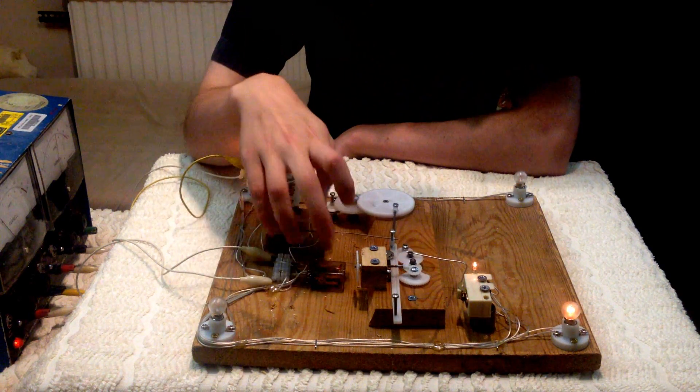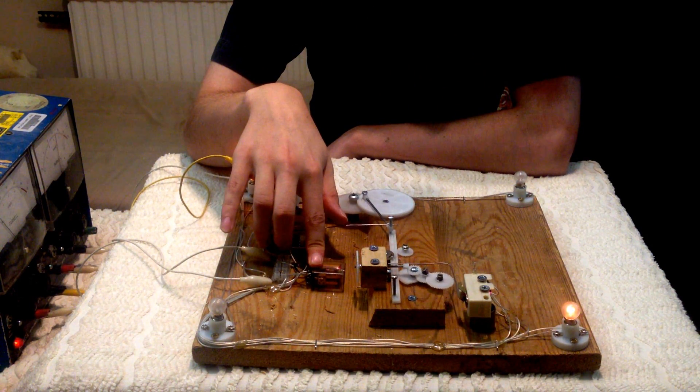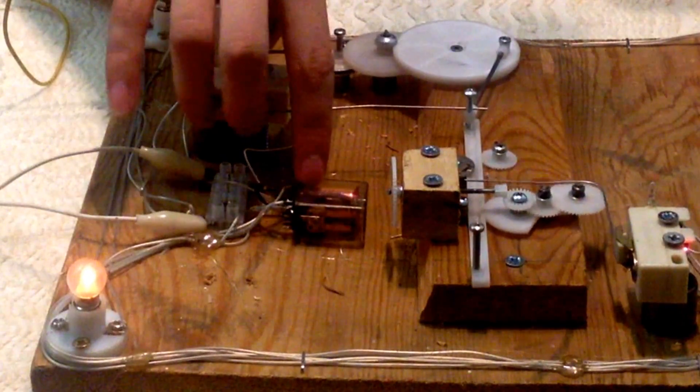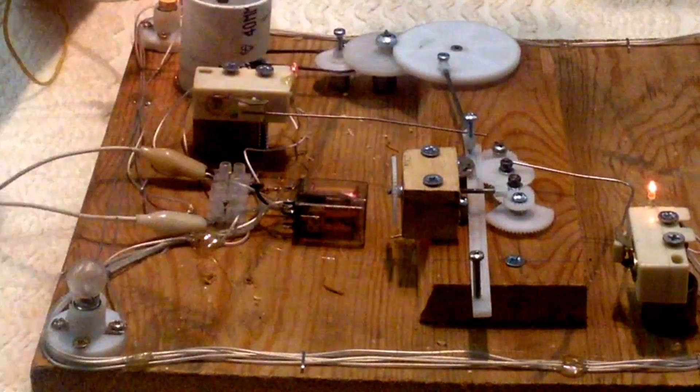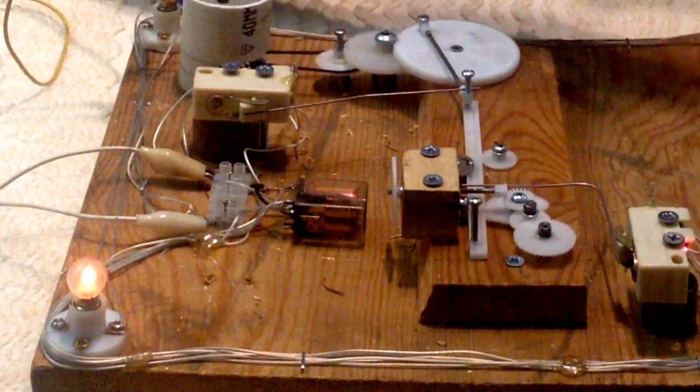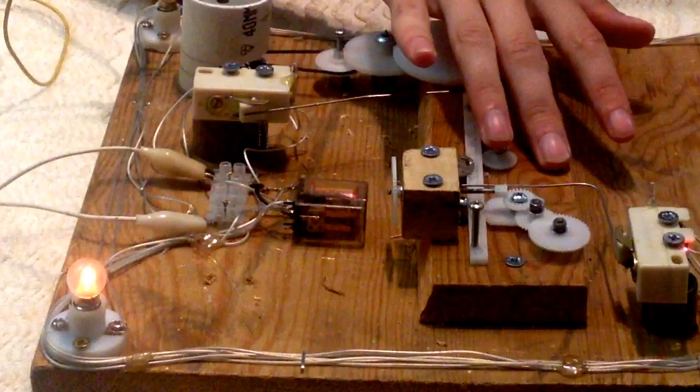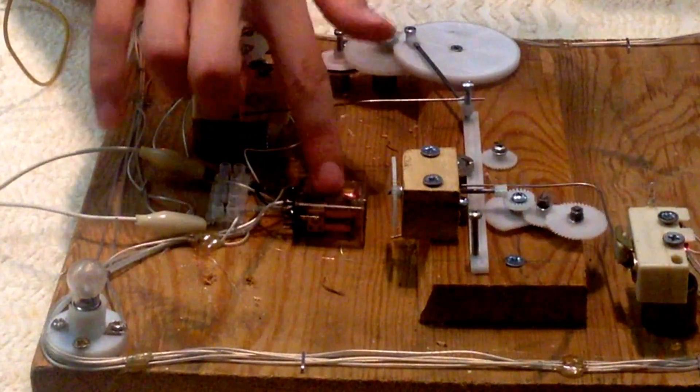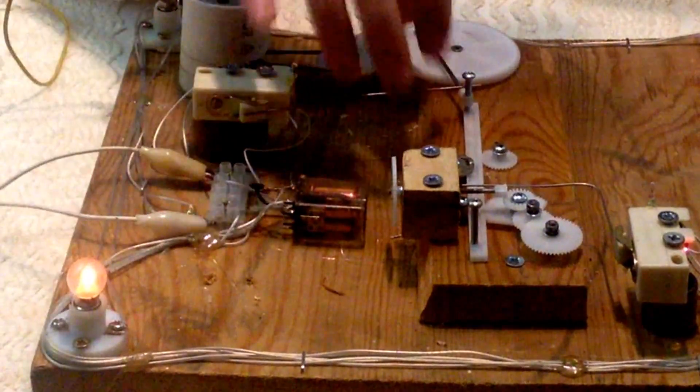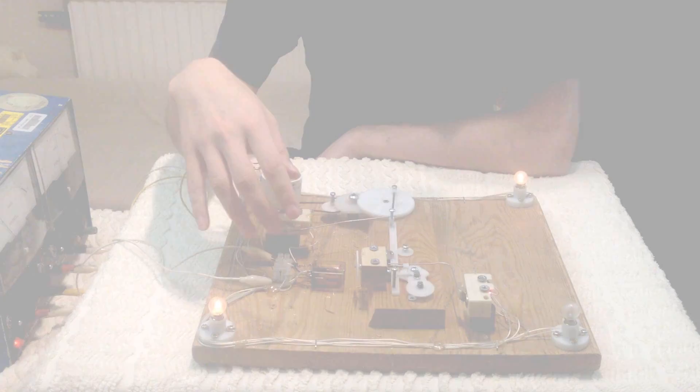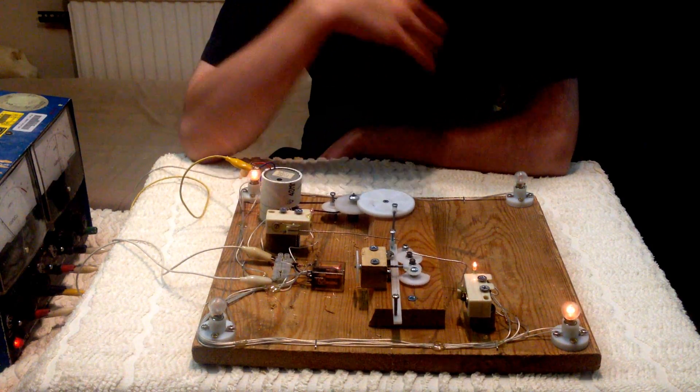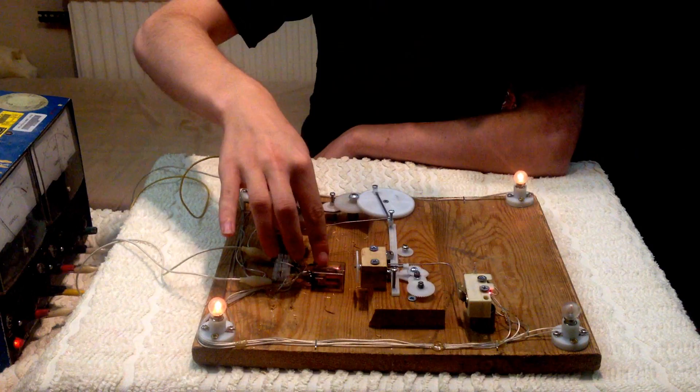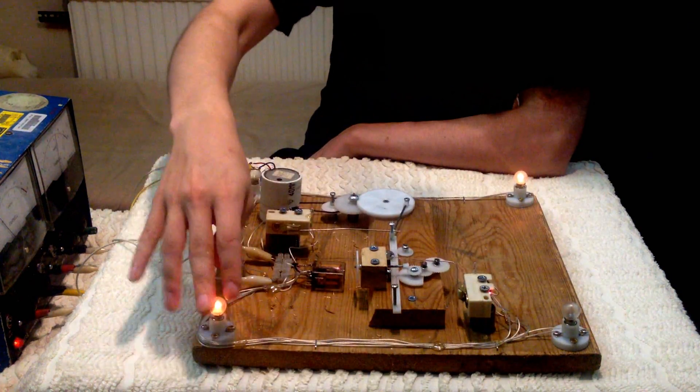And this thing here, this component here, this is what's known as a relay. It's basically what's switching between the two sets of bulbs every time. Every time one of the switches rests, this thing here is basically the heart of the bulbs. So the switches feed into here, and these consequently feed into bulbs.